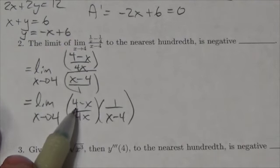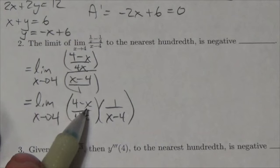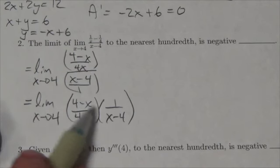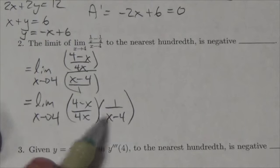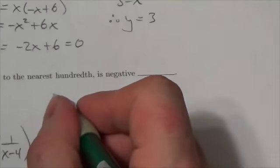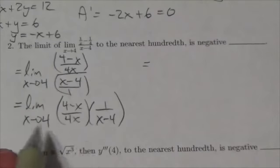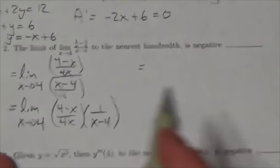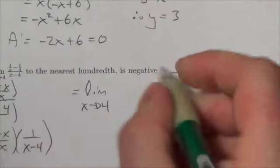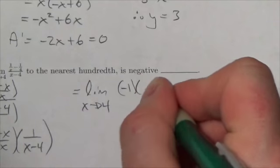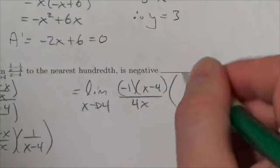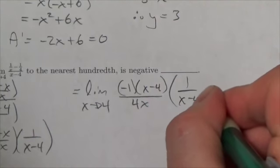And then look at this, oh, this is so tantalizingly close. 4 minus x, and then down here in the denominator, x minus 4. Everything's identical except the signs are different. So what I would do here is factor out a negative out of here, and this will get us the limit as x approaches 4. Notice I still write that. Negative 1, x minus 4 over 4x times 1 over x minus 4.